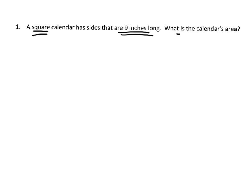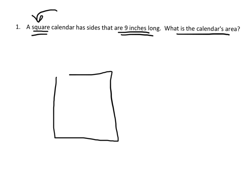I'm going to draw a picture, beginning with a square because the problem says it is a square. That's pretty horrible but that's a square. It says the sides are 9 inches long, so this is 9 inches, this is 9 inches, this is 9 inches, and this is 9 inches. The question asks: what is the calendar's area?